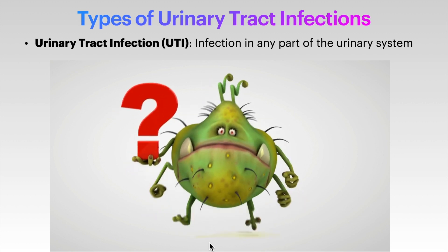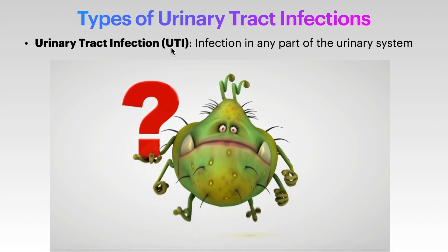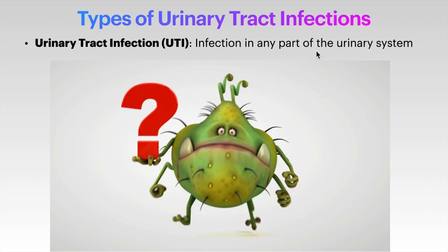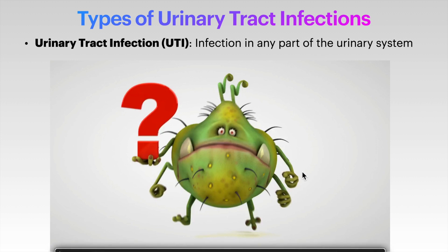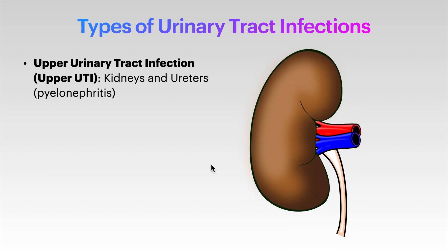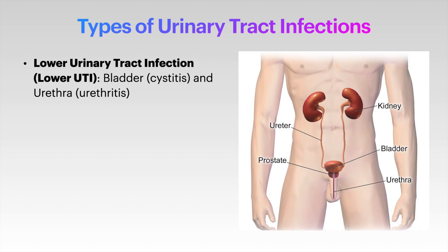A urinary tract infection, simply referred to as UTI, is an infection in any part of the urinary system — that may involve kidneys, ureters, bladder and urethra. If a UTI occurs in the kidneys and ureters, it is referred to as upper urinary tract infection, or pyelonephritis. If it occurs in the bladder, that is cystitis; if it happens in the urethra, it is urethritis.